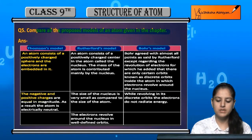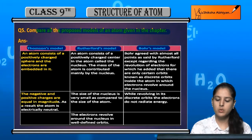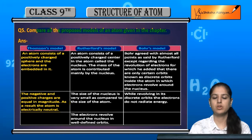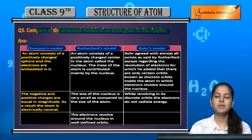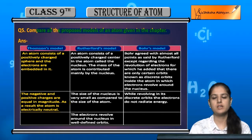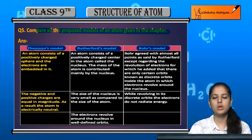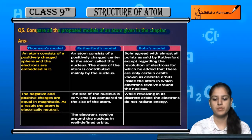The negative and positive charges are equal in magnitude, as a result the atom is electrically neutral. To explain the atom's electrical neutrality, he said that the negative and positive charges present in an atom have equal magnitude, which is why as a whole it is neutral. So this was Thompson's model.